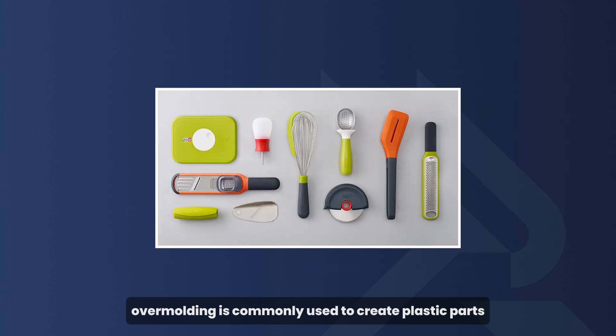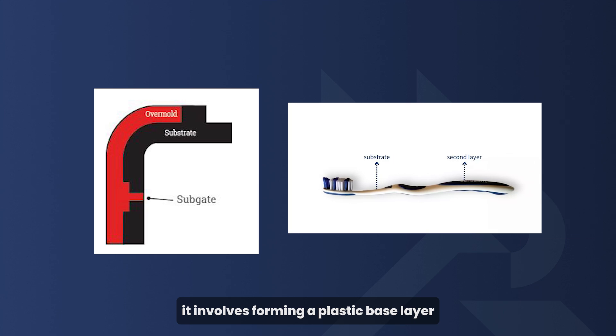Overmolding is commonly used to create plastic parts with rubber handles. For instance, it involves forming a plastic base layer and then adding a rubber top layer to enhance grip, such as on a toothbrush.